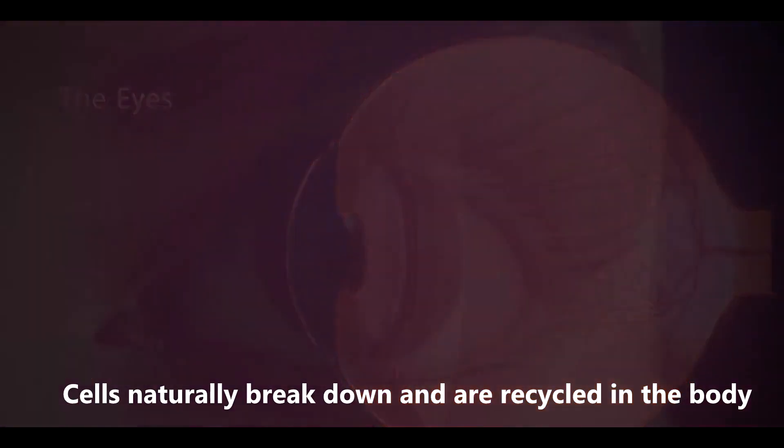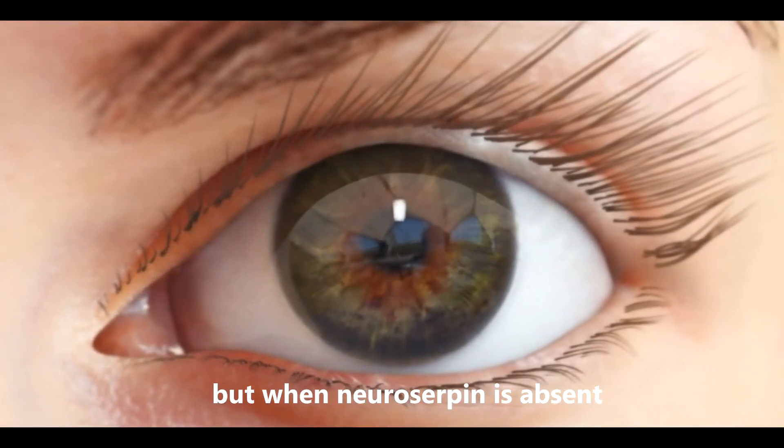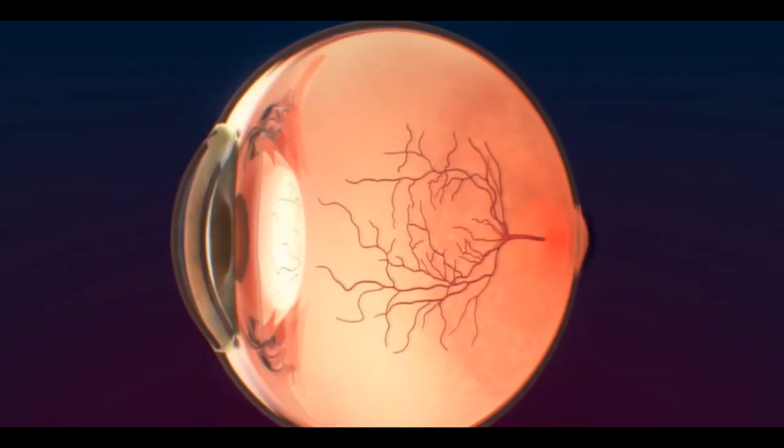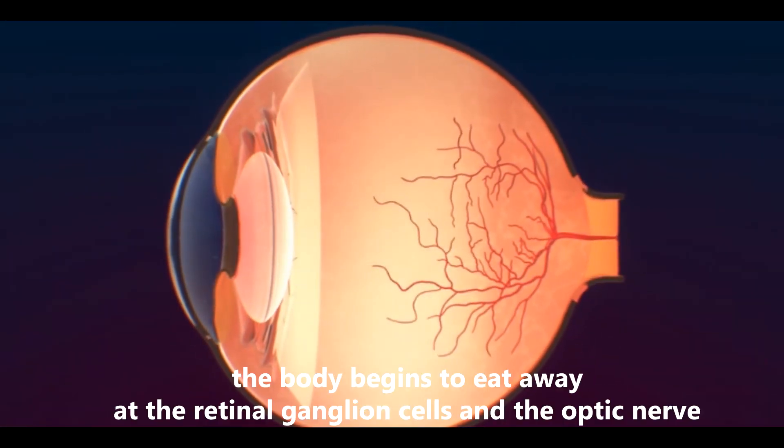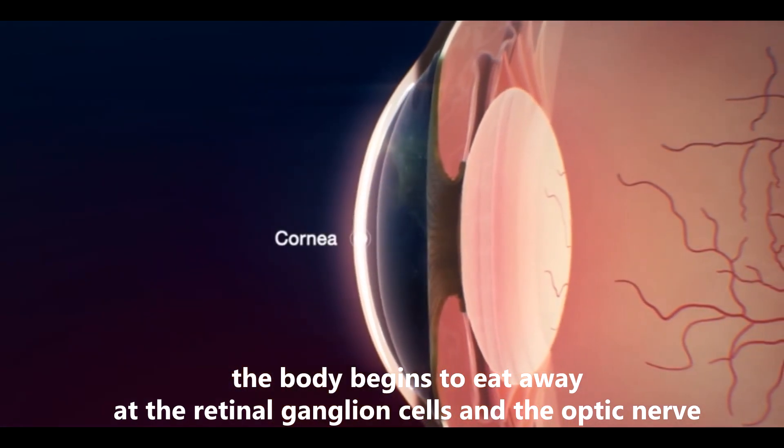Cells naturally break down and are recycled in the body, but when neurosurpin is absent, this process speeds up in the retina. Essentially, the body begins to eat away at the retinal ganglion cells and the optic nerve.